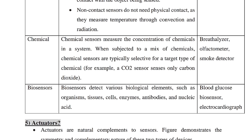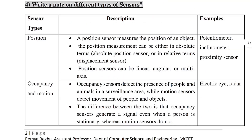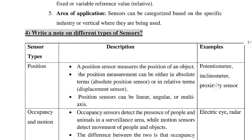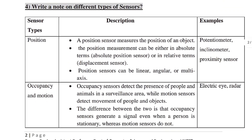There are 13 types of sensors that we have discussed. It is important that you memorize them. This is also an important question for the exam. The types include position, occupancy, motion, pressure, temperature, and force sensors, among others. You can study these for your exams.